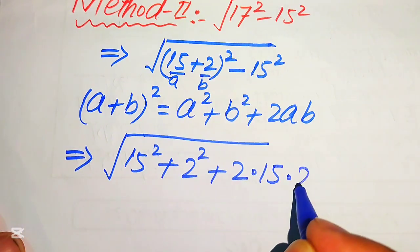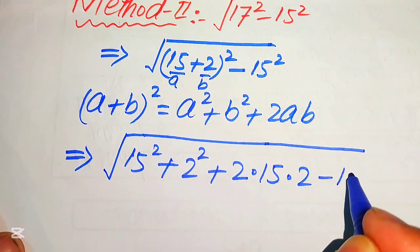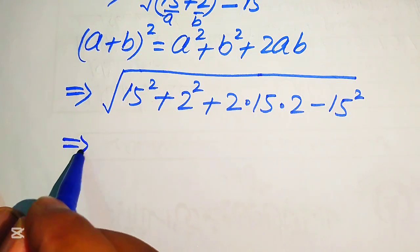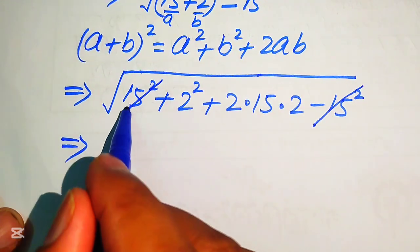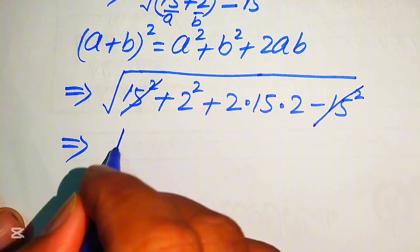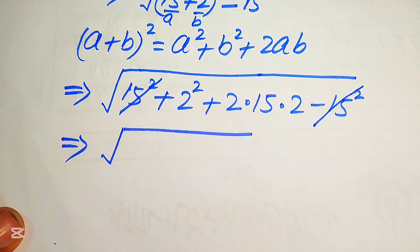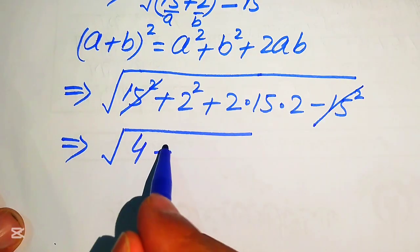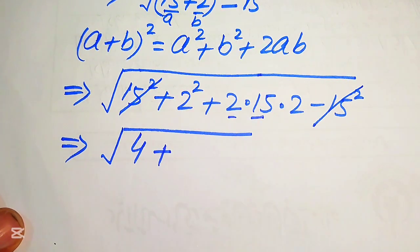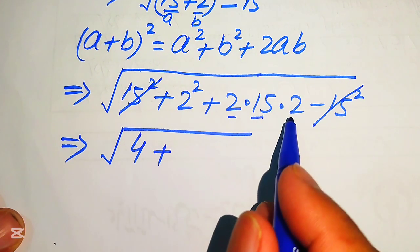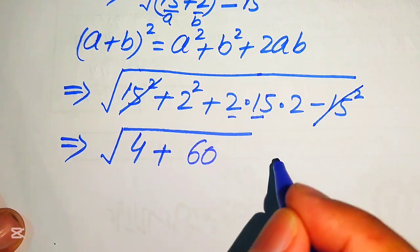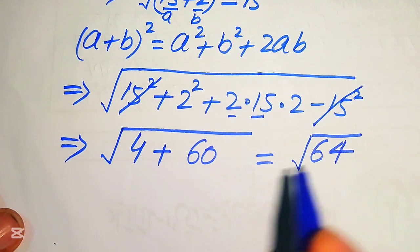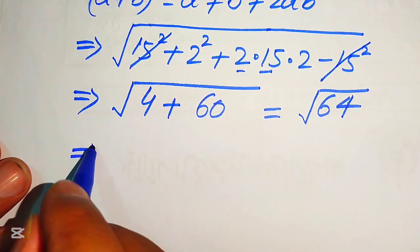We now cancel the like terms: the minus 15 squared and the plus 15 squared cancel each other out. Simplifying the remaining terms, 2 squared equals 4, and 2 times 2 times 15 equals 60. Adding 4 plus 60 gives us 64.